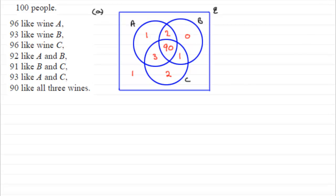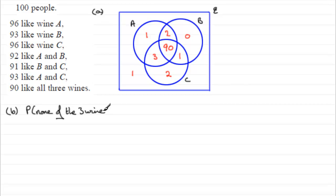Now let's get into answering the probability questions. We'll start with part B — what's the probability that someone doesn't like any of the three wines? I'd write it as P(none of the three wines). Well, nice and easy — we can see that it's got to be this one person who doesn't like any of the wines, out of 100. So that's one hundredth, or as a decimal, 0.01.